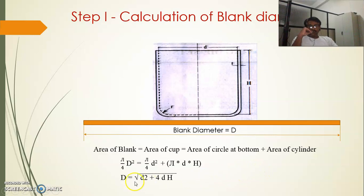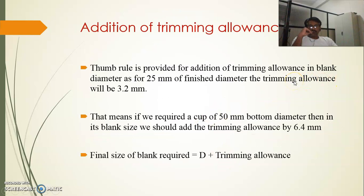This is the formula by which we can readily calculate the blank diameter. We also require to add the trimming allowance into the cup. The thumb rule is that for every 25 mm of finished diameter, we add a trimming allowance of 3.2 mm. For example, if we require a cup of 50 mm bottom diameter, we add 6.4 mm to the blank size — 3.2 mm for each 25 mm. So the final blank size becomes D plus trimming allowance.